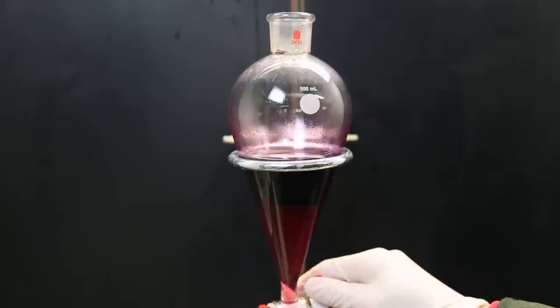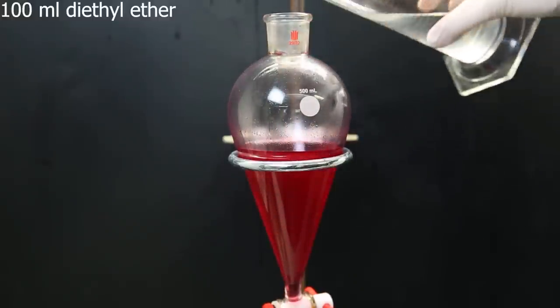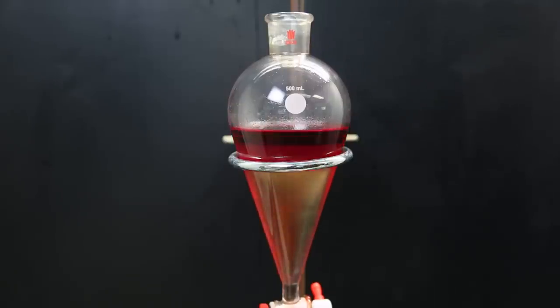I separate the layers, and then add the water layer back into the separatory funnel. I add 100 ml of diethyl ether, to take up the remaining diethylbenzoic acid. We can see pretty much all of the red color has moved into the ether, and I separate the layers again.